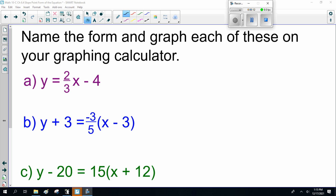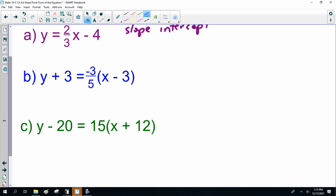Now, name the form and graph each of these on your graphing calculator. Well, this is slope-intercept form, y equals 2/3 x minus 4. I'm not doing that for you. I've shown you how to do that in class practice. Now, it's the next two I need you to practice on, because how are you supposed to do this?